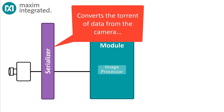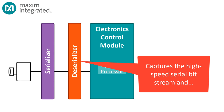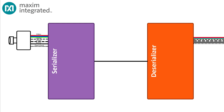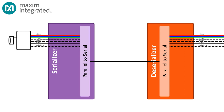The serializer's job is to capture this video stream in whatever format the camera presents it, and convert that torrent of data to a single high-speed serial bit stream. Then the deserializer captures the bit stream and turns it into something usable for the electronics control module or for the display. In GMSL, whatever comes into the serializer goes out of the deserializer — the data presented to the parallel inputs on the serializer are sampled on the pixel clock, and the deserializer recovers the pixel clock and presents the sampled parallel signals on its outputs.